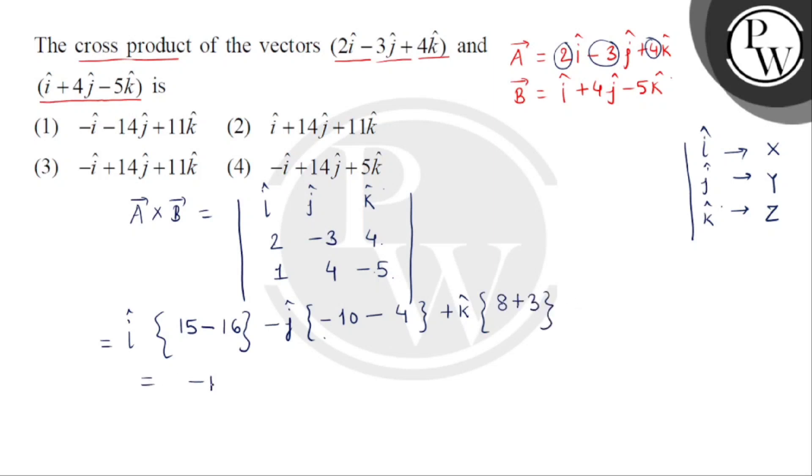तो यह answer मिला हमें minus i cap. Then this is minus multiplied by minus will be plus 14 j cap, plus 11 k cap.